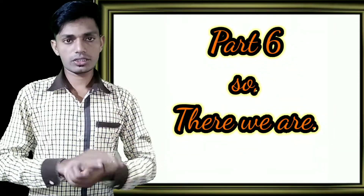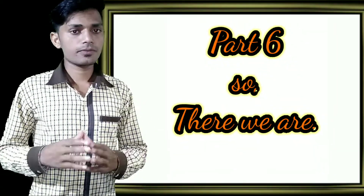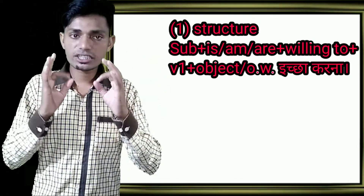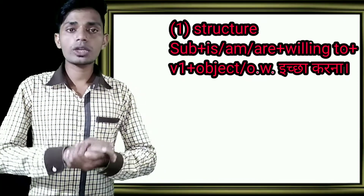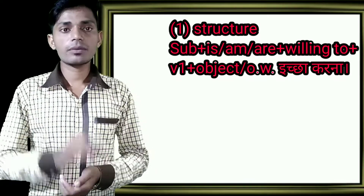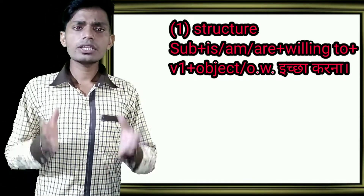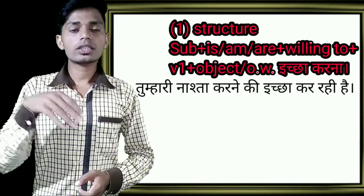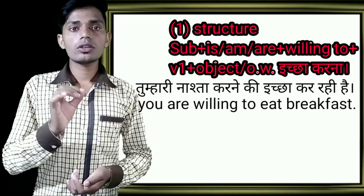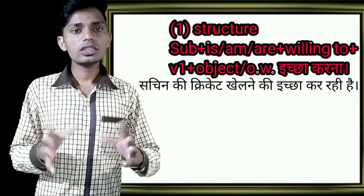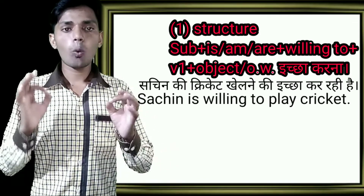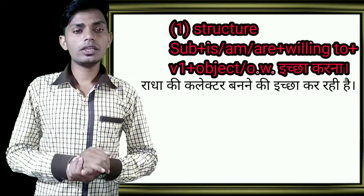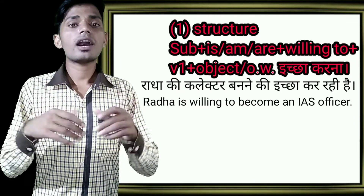This is our sixth part of spoken English structures. Our first spoken English structure uses 'subject + is/am/are + willing to + verb'. For example: I am willing to take tea. You are willing to eat fast. Sachin is willing to play cricket. Radha is willing to become an IAS officer.